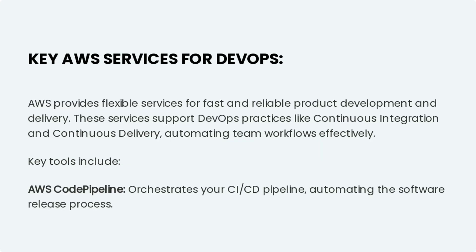AWS provides flexible services for fast and reliable product development and delivery. These services support DevOps practices like continuous integration and continuous delivery, automating team workflows effectively. Key tools include AWS CodePipeline, which orchestrates your CI/CD pipeline, automating the software release process.